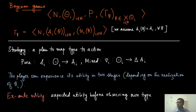As before, this is the definition where all these tuples are already explained. In particular, we know that gamma of theta is a normal form game, which is indexed by theta, which is the type profile realized from the common prior. Now, what is the strategy in this case?